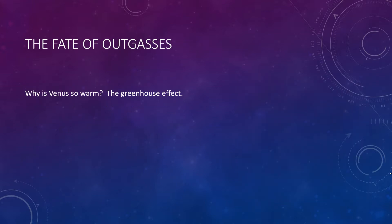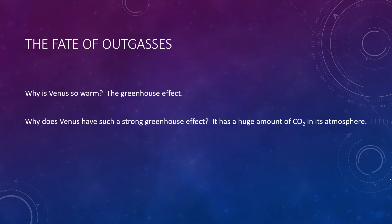It's tempting to attribute Venus's high surface temperature solely to the fact that Venus is closer to the Sun than the Earth. But Venus would actually be quite cold without its strong greenhouse effect, because its bright clouds reflect much more sunlight than Earth. The real question is why Venus has such a strong greenhouse effect. The simple answer is that Venus has a huge amount of carbon dioxide in its atmosphere — nearly 200 times that of Earth's surface — blocking out the light and keeping the heat in.